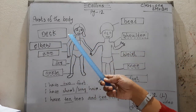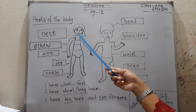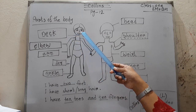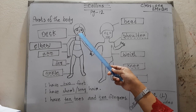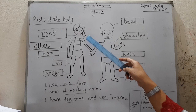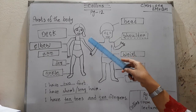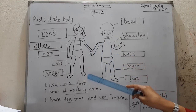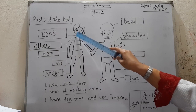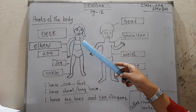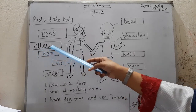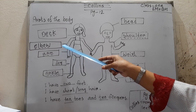First one: neck — N-E-C-K. Neck means 'ghar' in Bengali. The definition: the part of a person's body connecting the head to the rest of the body. So 'neck' in Bengali is 'ghar'.